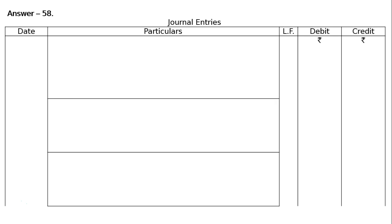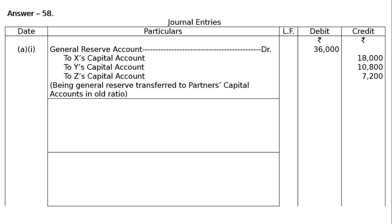Here, the proper journal format will be used. First entry: General Reserve Account debited Rs. 36,000. To X's Capital Account Rs. 18,000, To Y's Capital Account Rs. 10,800, To Z's Capital Account Rs. 7,200. Being General Reserve transferred to partners' capital accounts in old ratio.